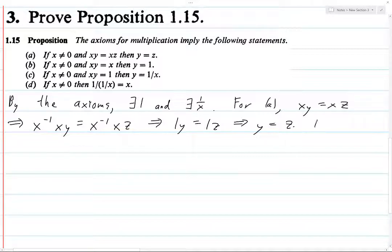Letting z equal 1 in a yields b. Because if you let z equals 1, then the statement of a goes from xy equals, basically a becomes b if you let z equal 1.